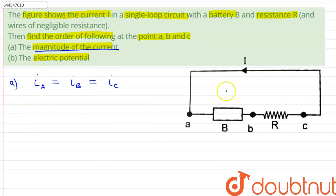Now for part B, the question is asking us to find out the order of electric potential.